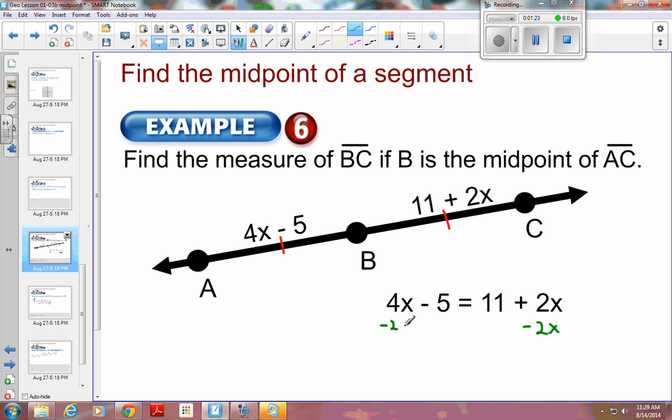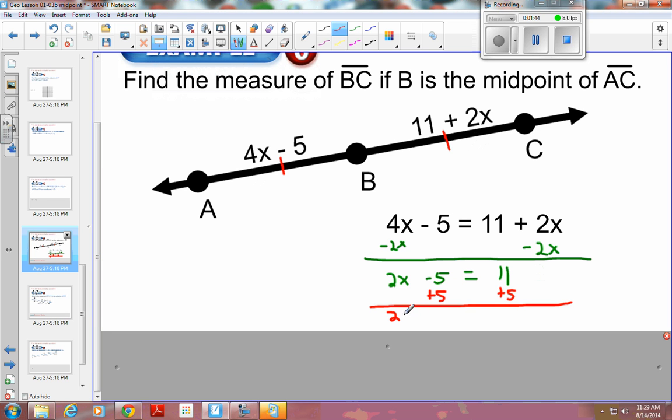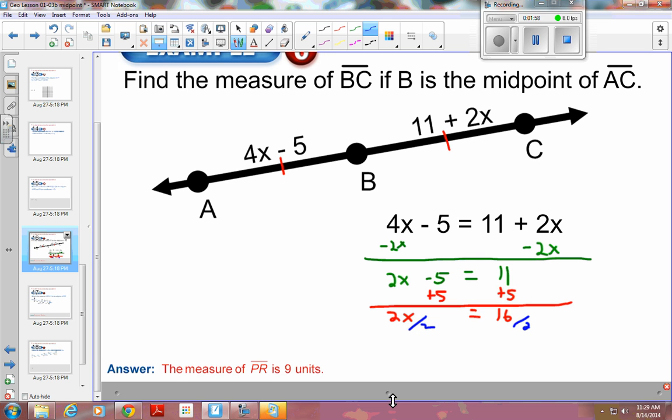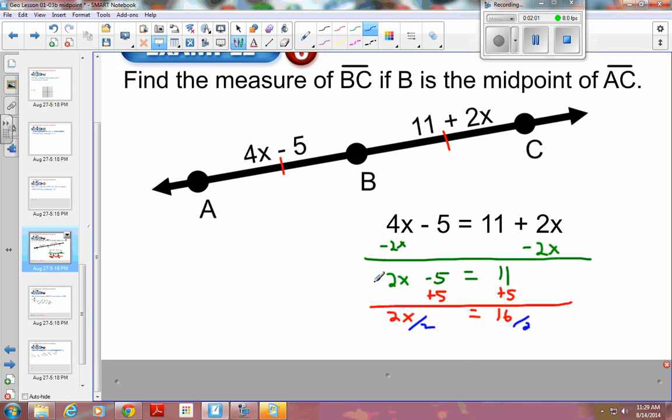Minus 2X, that would leave 2X minus 5 equals 11. Then you need to add 5 to both sides to get the X by itself. Then you have 2X is equal to 16. Final step here would be to divide by 2 and divide by 2.